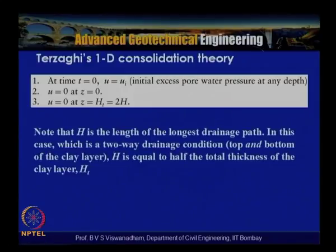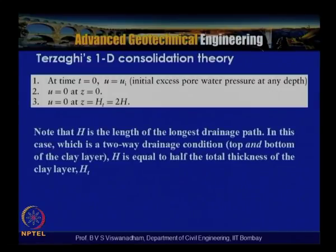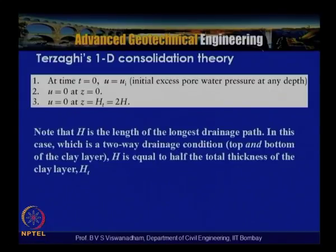H is the longest drainage path. If a clay layer of thickness 2h is sandwiched between sand layers at the top and bottom, the top portion drains upward and the bottom portion drains downward — this is called double drainage or two-way drainage (also called a double open layer). In this case, consolidation is relatively faster, and the drainage path length hdr = ht/2.